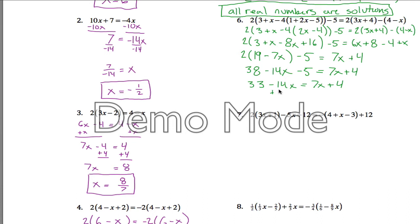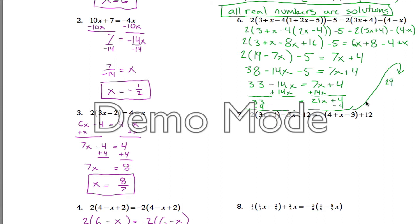To keep things positive, maybe I'll add 14x to both sides. That'll leave me with just a 33 on this side and a 21x plus 4 over here. Then I want to subtract 4 from both sides. 33 minus 4 gives me 29, and on the right I would have 21x. So finally if I divide both sides by 21, I get x equals 29 divided by 21. If you can do that problem, you can do pretty much any of these — it's about as hard as I could make one.